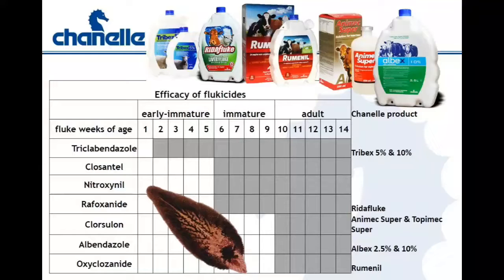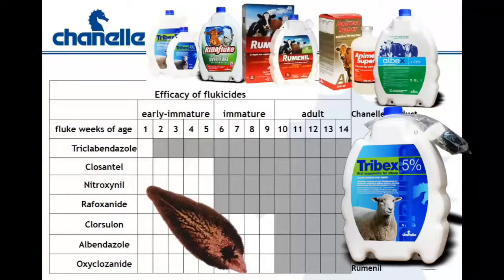Triclabendazole, the active ingredient in Tribex, is currently the only one that will kill all stages of fluke, including the early immatures.